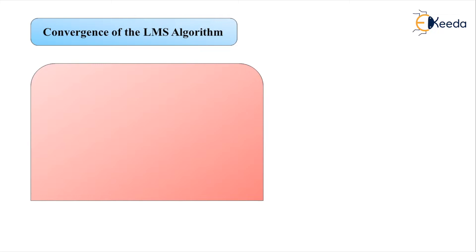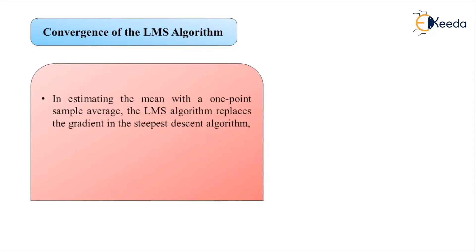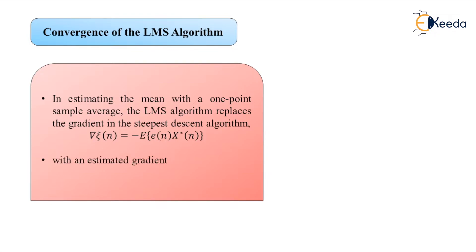The LMS algorithm replaces the gradient step used in the steepest descent algorithm. In the steepest descent algorithm, the gradient of zeta(n) was equal to minus the estimate of the product E(n) with the complex conjugate of X(n). This is replaced by the estimate — denoted with a cap — so del-cap of zeta(n) equals minus E(n) times the complex conjugate of X(n).